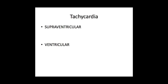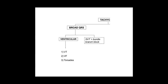Moving on to tachycardias, these can be broadly broken down into supraventricular and ventricular, depending on whether the focus of arrhythmogenesis is above or within the AV node, or whether it's in the ventricles. Starting with ventricular tachycardias: as these are caused by a ventricular rhythm, the QRS complex is broad. So with a tachycardia, you need to see if the QRS complexes are narrow or broad. If they are broad, it could be a ventricular tachycardia, or occasionally a supraventricular tachycardia with associated bundle branch block — though it can be quite difficult to distinguish between the two.